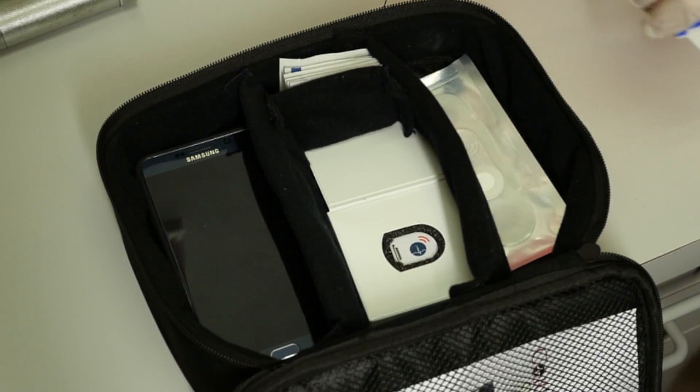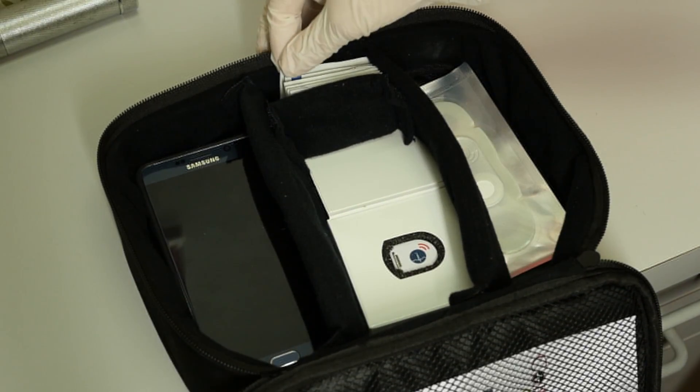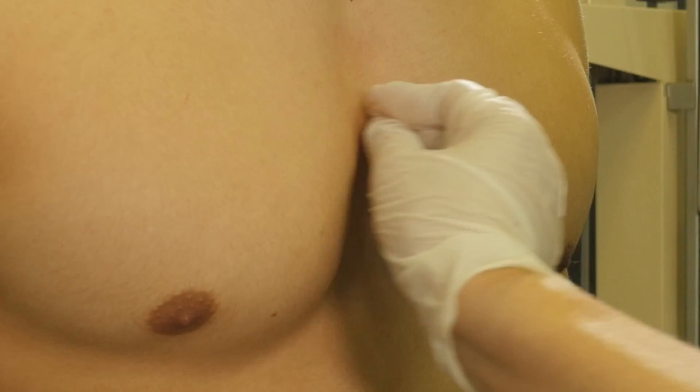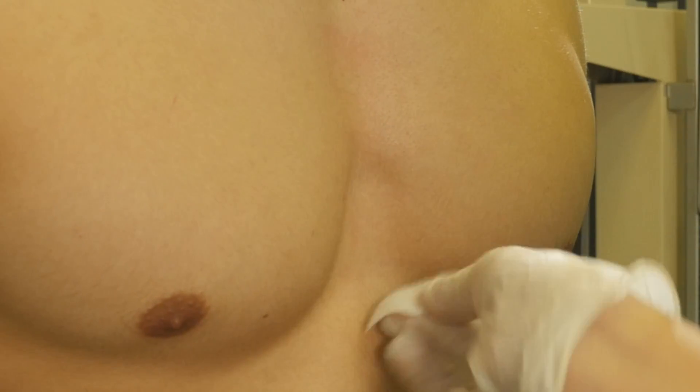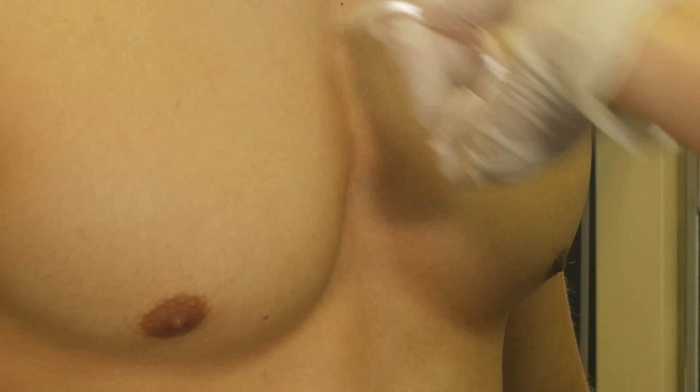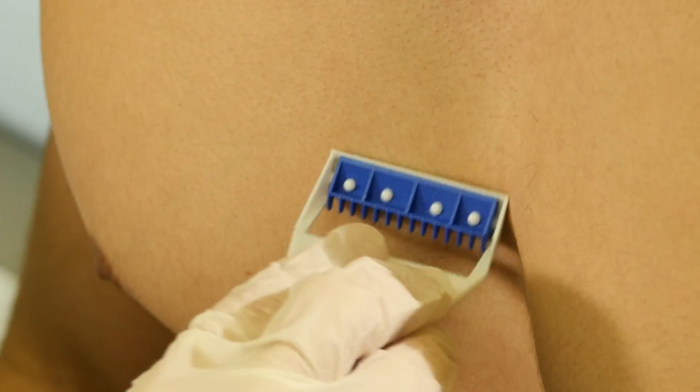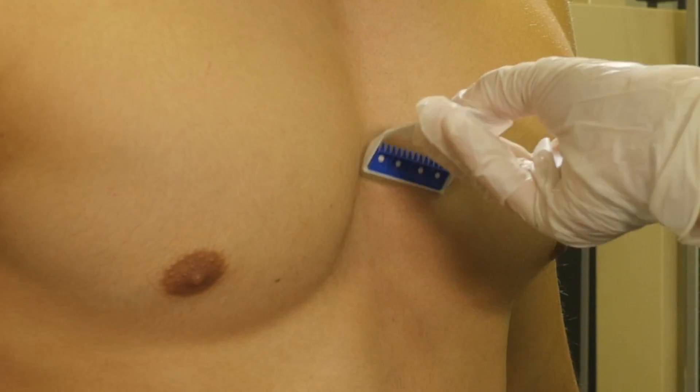Prepare the application area by shaving any chest hair with the disposable razors in the kit and use an alcohol swipe to clean and prep the skin. Be sure to remove any hair and debris.